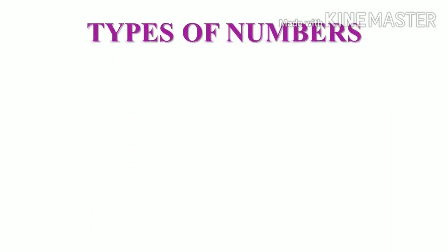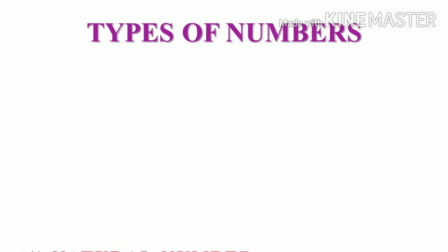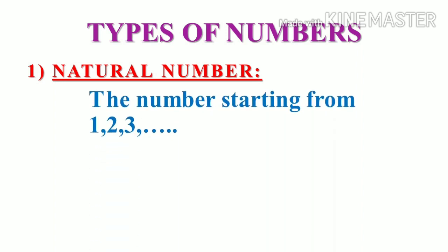We are going to see interesting topic, types of numbers. Can you say what are natural numbers? Good. One, two, three are called as natural numbers.